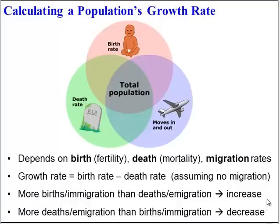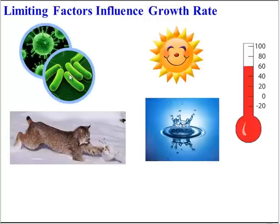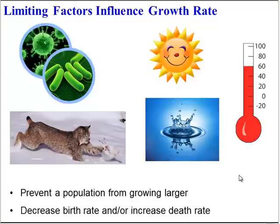So what determines the birth rate and the death rate? This balancing act comes down to limiting factors. Limiting factors include things like pathogens, predators, sunlight, water availability, and even weather, because all of these things can prevent a population from growing larger. Ultimately, they determine whether the birth rate and death rate are increasing or decreasing.